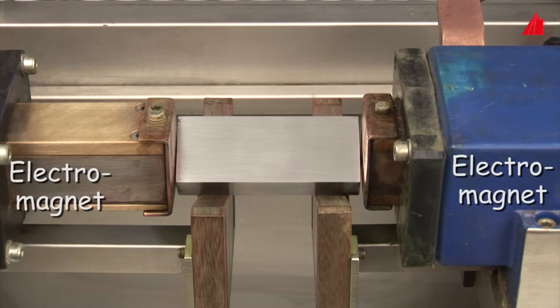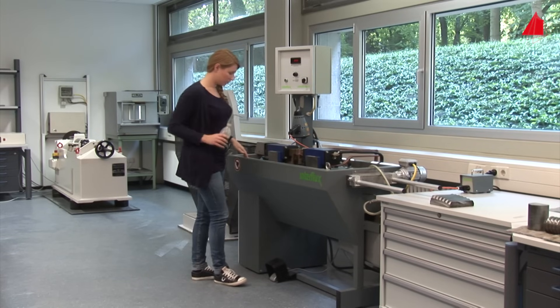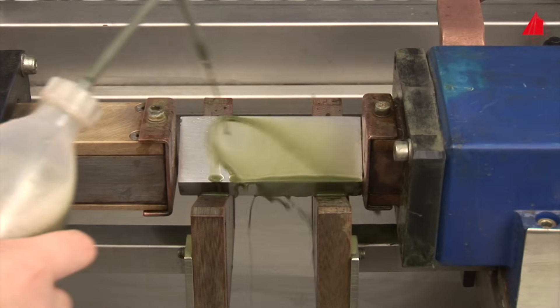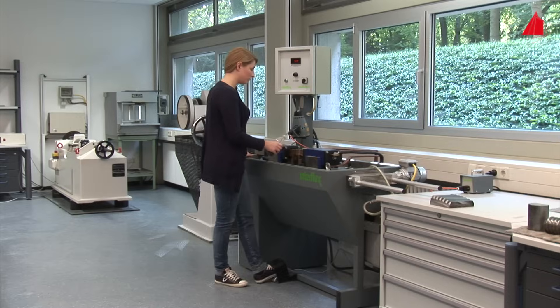The tester inserts the test piece between the two poles of an electromagnet, then takes a bottle with a suspension of magnetic particles, turns on the electromagnet with a foot switch, and applies the suspension of magnetic particles onto the test piece.